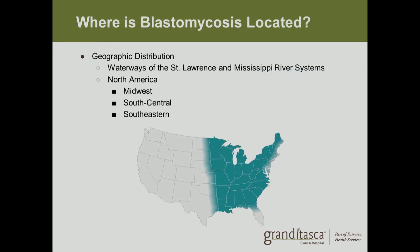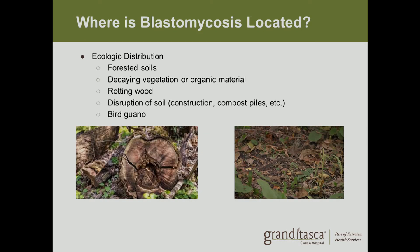Blastomycosis has a significant geographic distribution bordering the waterways of the St. Lawrence and Mississippi River systems. Within North America it is most prevalent in the Midwest, South Central, and Southeastern parts of the United States. Ecologically it is found in forested soils, decaying vegetation or organic material like a compost pile, within rotting wood, and in disrupted soil such as at construction sites. It is also found in bird droppings.